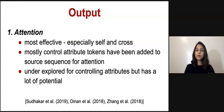Attention mechanism has proved to be most effective, especially the self and cross attention used in transformers in controllable text generation. This is mostly used by adding control attribute tokens to the source sequence so that the self attention can capture it.